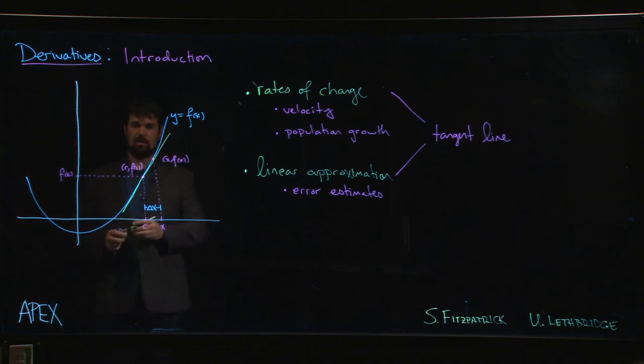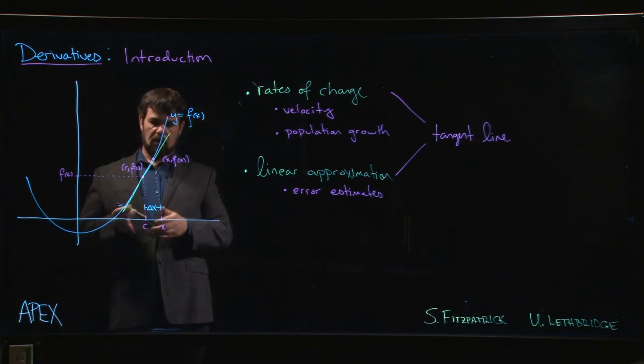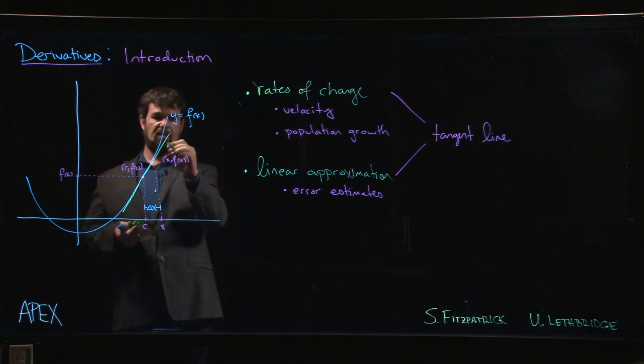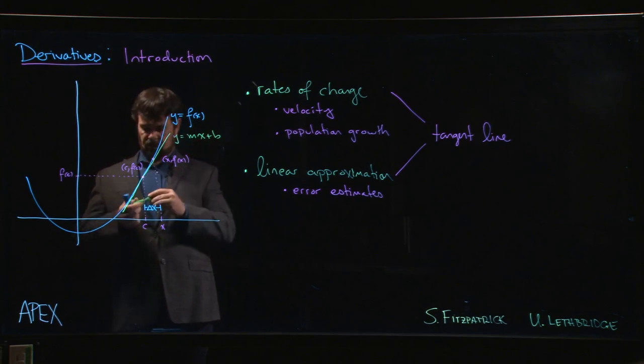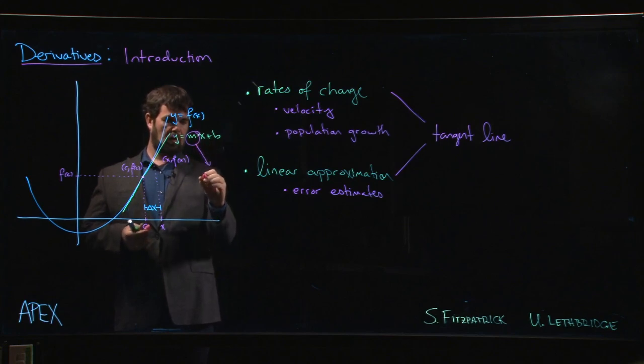So this is the idea of this tangent line, and we want to figure out what the slope is. The slope of this tangent line, so this line has some form y equals mx plus b, the slope here for this line is what we're going to call the derivative.